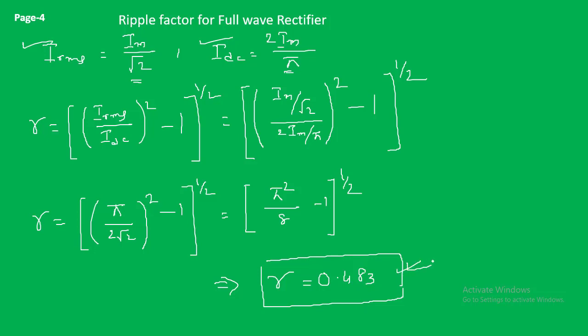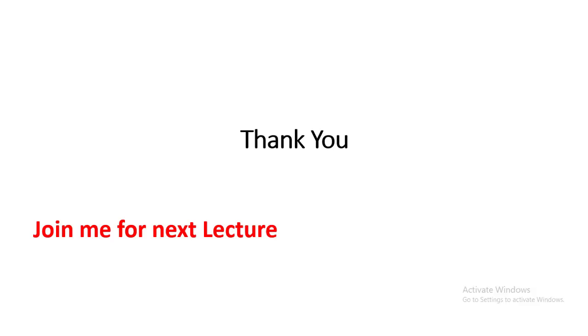Comparing the two results is very interesting: for the half wave rectifier gamma is 1.21, meaning ripples exceed the steady DC, whereas for the full wave rectifier gamma is 0.483, meaning ripples are about 50% of the steady DC component. This is the significance of the ripple factor — before applying any filter, we must know how much ripple the rectifier produces so we can choose the appropriate filter accordingly. That is it for ripple factor; join me for the next lecture.